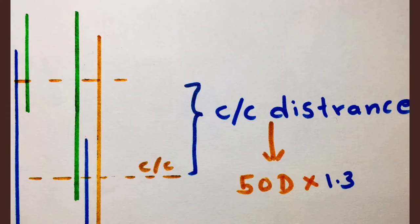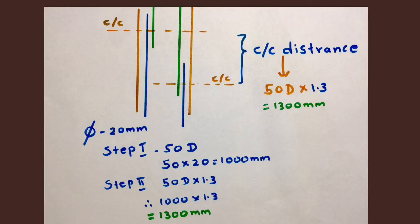There is a formula to find out the lapping length distance. That's not a new formula. We already know 50D is lapping length, so you just multiply 1.3. This is the formula to find out the center to center distance. So 50D into 1.3 is the center to center distance formula.